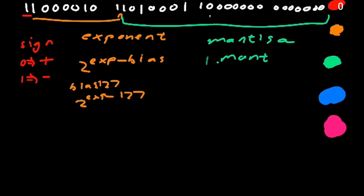In our binary number, the first digit, the first bit is 1, so the sign is negative. And our exponent is 1, 0, 0, 0, 1, 0, 1. I missed a 0.